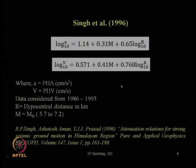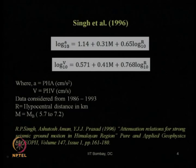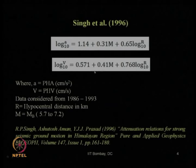In the previous lecture, we saw various attenuation relationships available in the literature. The relationship given by Singh et al. in 1996 — the work of Professor R.P. Singh and his research group from IIT Kanpur — can be used to estimate the peak horizontal acceleration. Units are specified because these are empirical relationships, so one must be careful about the unit system used when developing the empirical relationship. They also proposed a relationship for peak horizontal velocity in centimeters per second, considering earthquake data from 1986 to 1993.